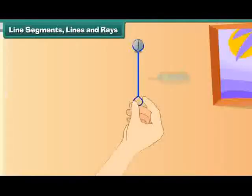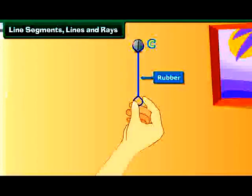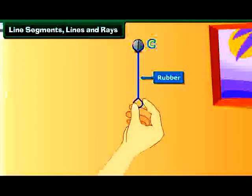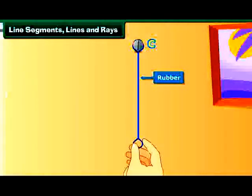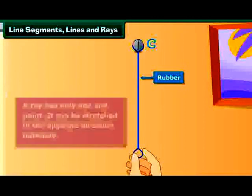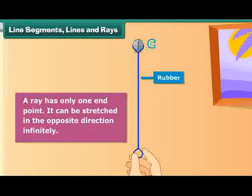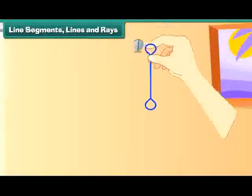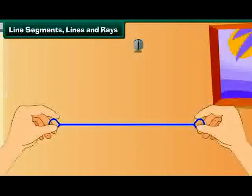Look at this thin strip of rubber. Let us nail it to the wall and name the point C. The other end of the rubber is free. Let us stretch it. First a little, then a little more, and then some more. What we get is a ray. A ray has only one end point. It can be stretched in the opposite direction infinitely. Let us now remove the nail and stretch the rubber in the other direction. We now have a line.